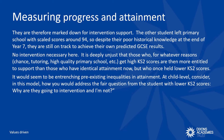'The other student left primary school with a scaled score of around 94, so despite their poor historical knowledge at the end of Year 7, they are still on track to achieve their own predicted GCSE results. Therefore, potentially no intervention necessary. It is deeply unjust that those who — for whatever reasons; chance, tutoring, high quality primary school, etc. — get high Key Stage 2 scores are then more entitled to support than those who have identical attainment now but who once held lower Key Stage 2 scores. It would seem to be entrenching pre-existing inequalities in attainment.' At child level, considering this model, how would you address this question from a student with lower Key Stage 2 scores: 'Why are they going to the intervention and I am not?'